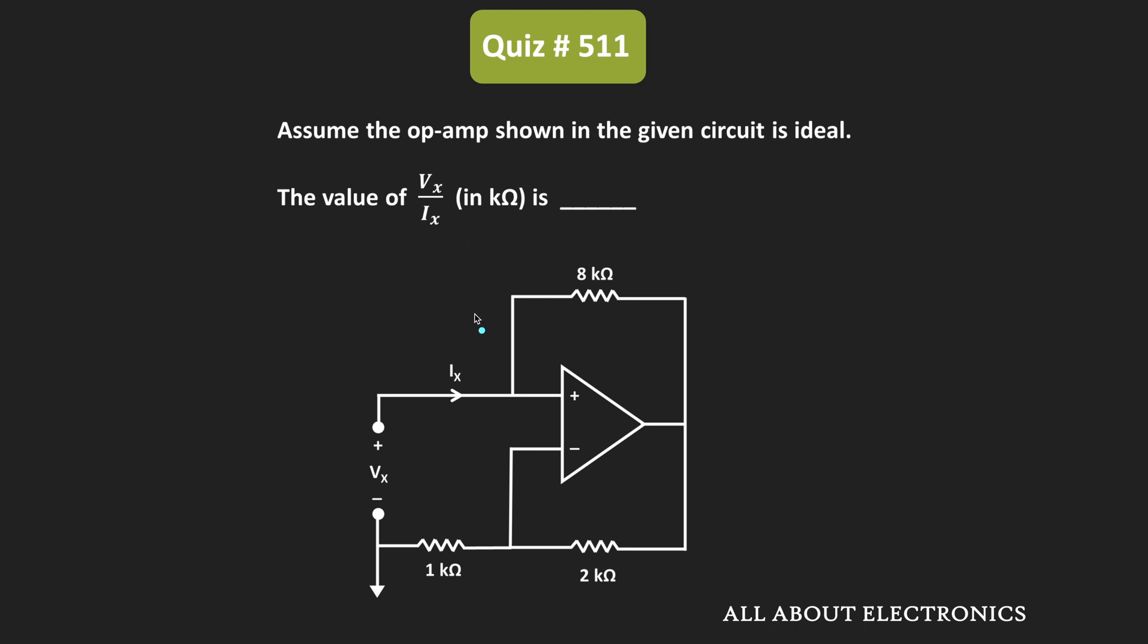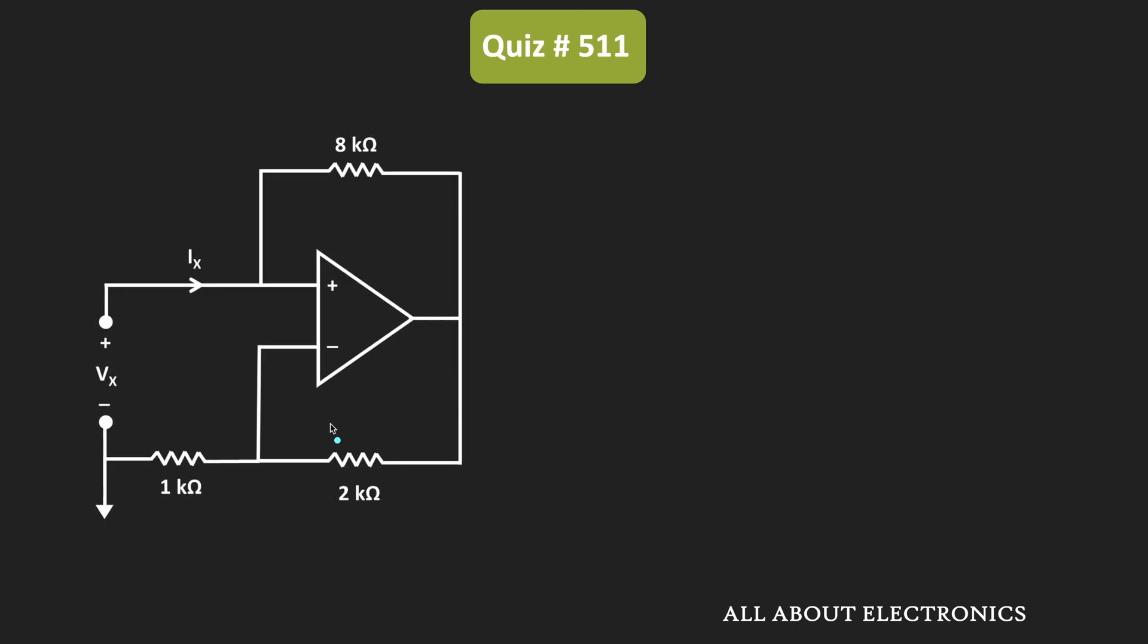So let us find that. So here if you observe the circuit, then it consists of both positive as well as the negative feedback. But here we are assuming that the influence of the negative feedback is more than the positive feedback.